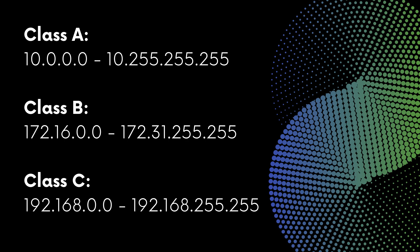IP addresses are categorized into two types: public and private. Public IP addresses are accessible over the internet, which is great for services that need to be reached globally; however, this does expose them to potential cyber threats. Private IP addresses, on the other hand, are used only within a local area network, or LAN, and provide a secure environment since they're not accessible from the internet. There are specific ranges reserved for private IP addresses — for example, any address starting with 10.x, 172.16 all the way up to 172.31, and 192.168 — those are all designated for private IP use. These addresses are not routed on the public internet and can be reused across different LANs without any conflict.